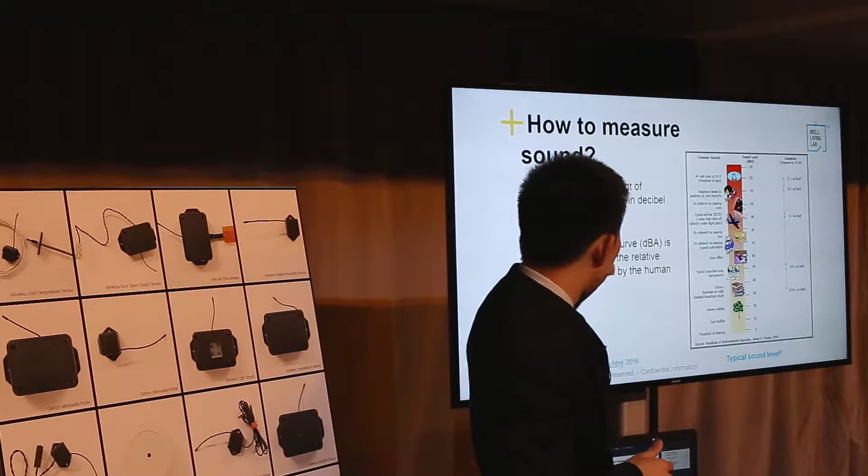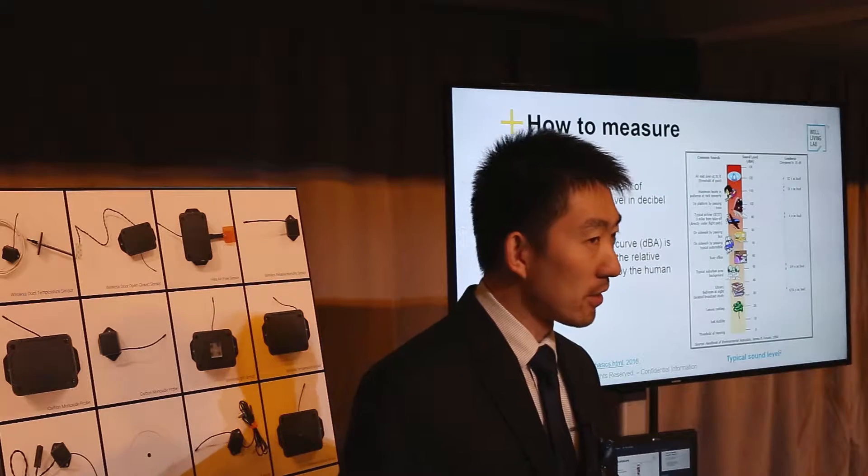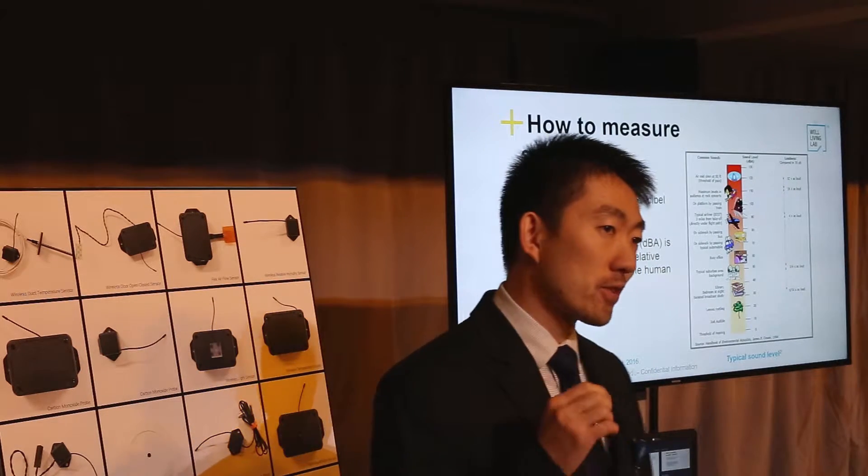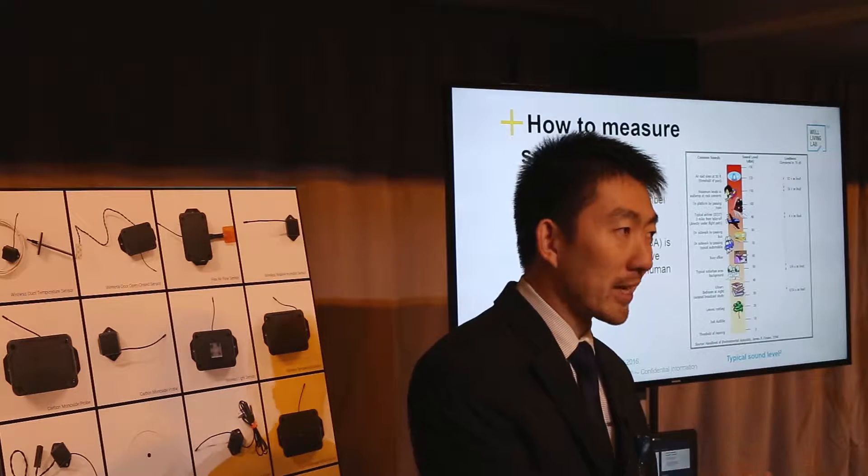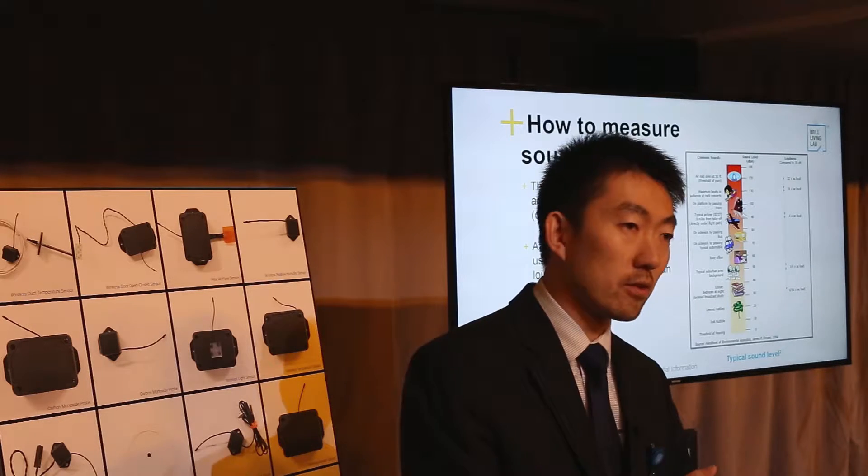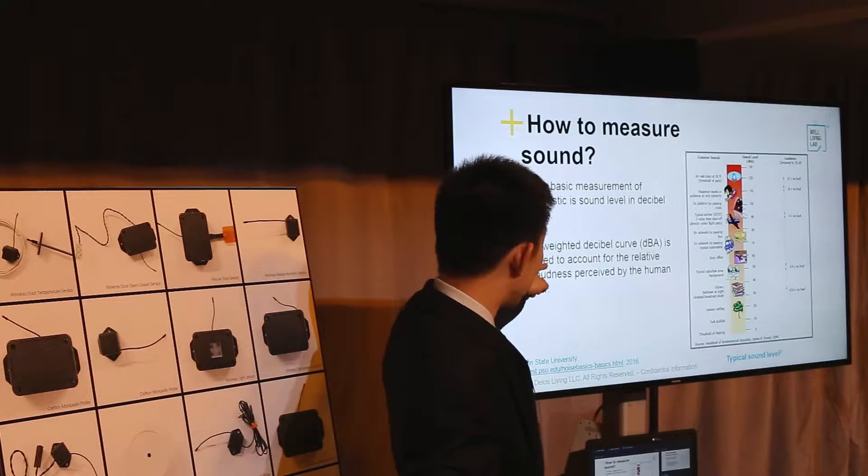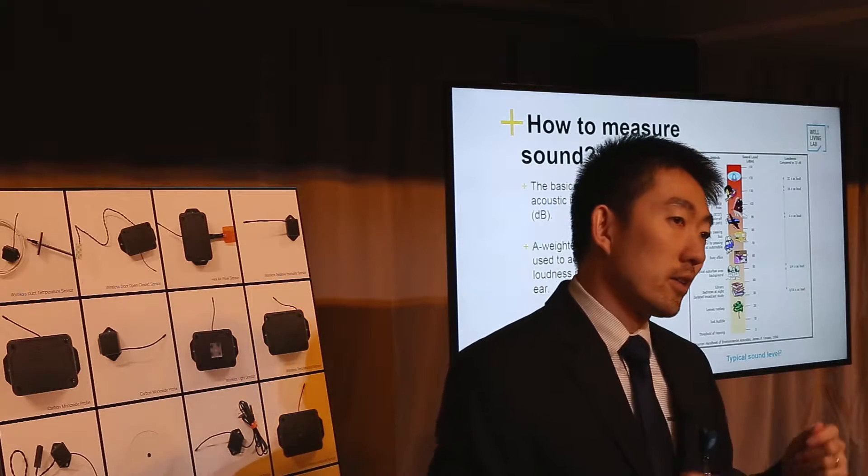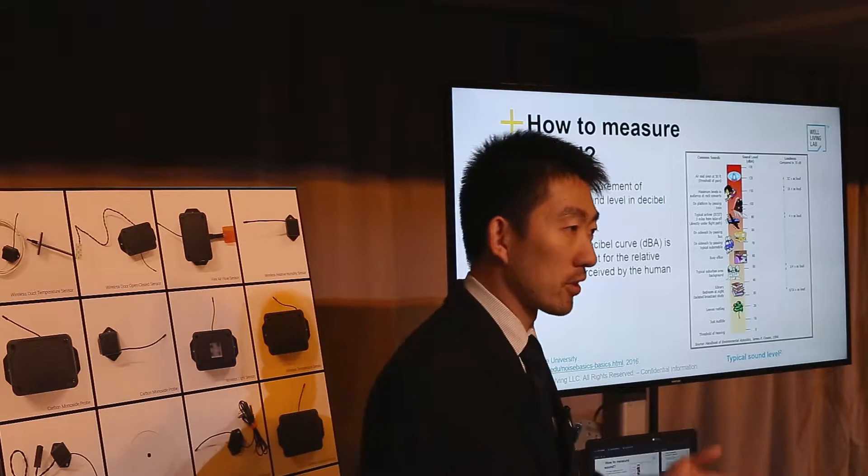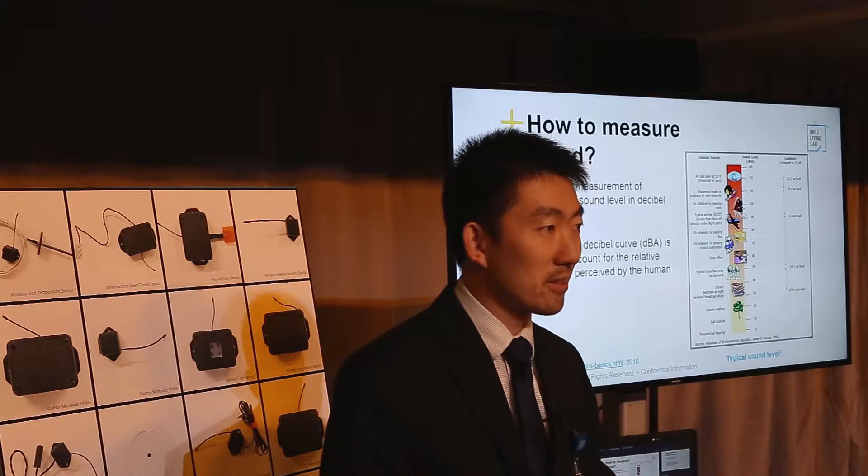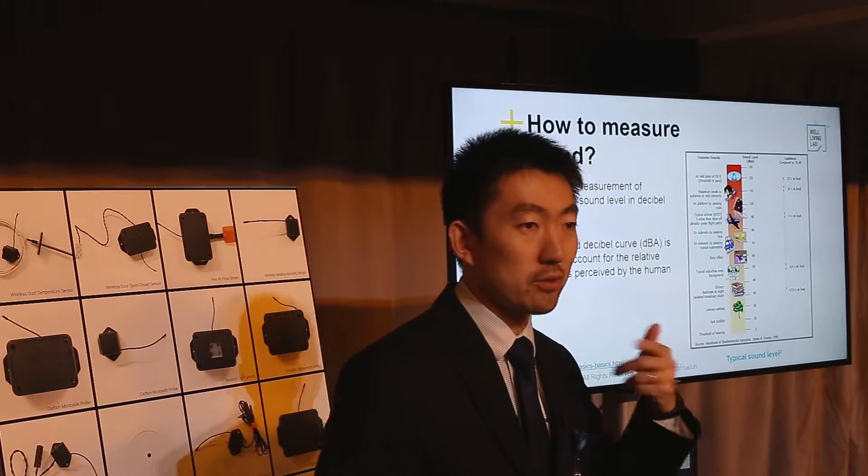But we typically use dBA. It means A-weighted decibels. It means our human ears have different sensitivity to different frequencies of sound - we cannot hear ultrasound, we cannot hear very low frequency sound. A-weighted decibel curve means these numbers are weighted by typical human ears. Every time we say dBA, it means it's weighted to human ears.